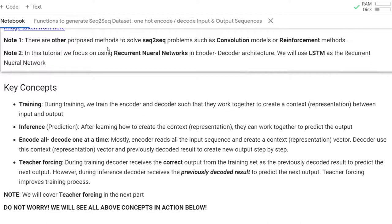There are other proposed methods to solve seq-to-seq problems other than the encoder-decoder model — for example, convolution models or reinforcement methods. In this tutorial, I will focus on recurrent neural networks in the encoder-decoder structure, and specifically I am going to use the LSTM implementation in Keras.